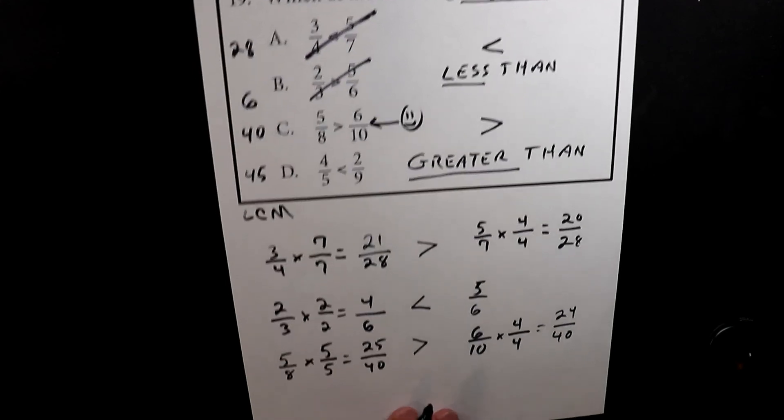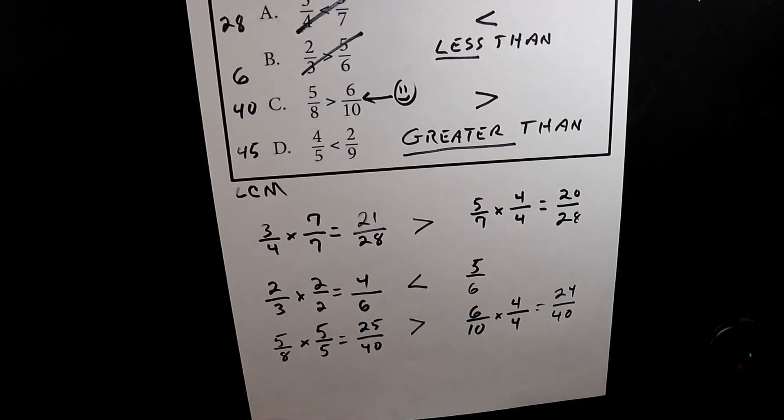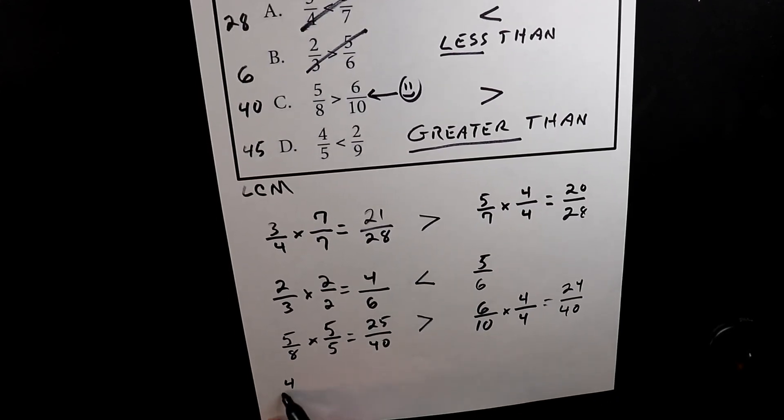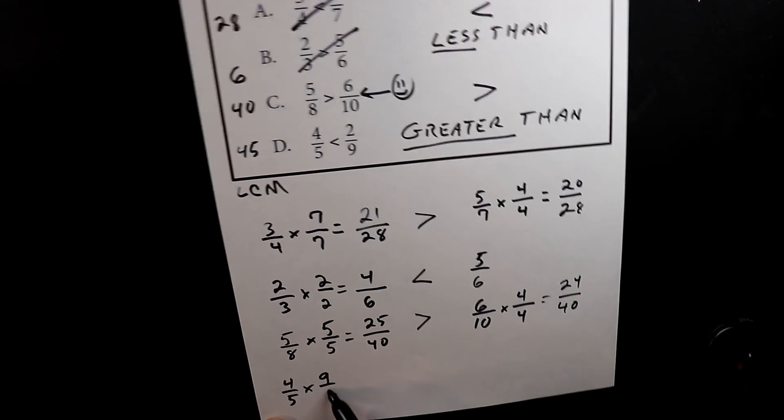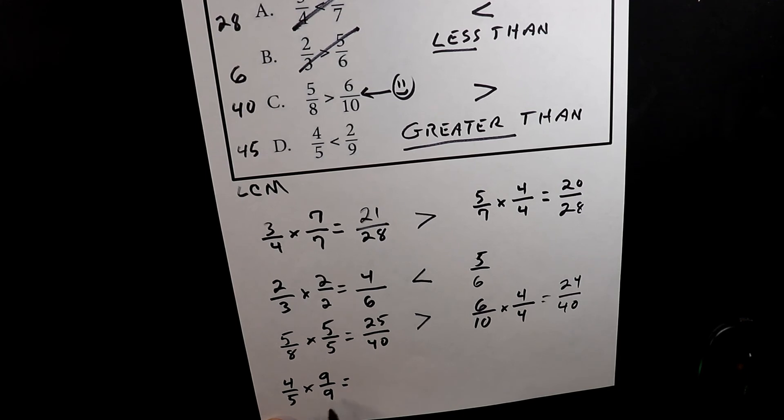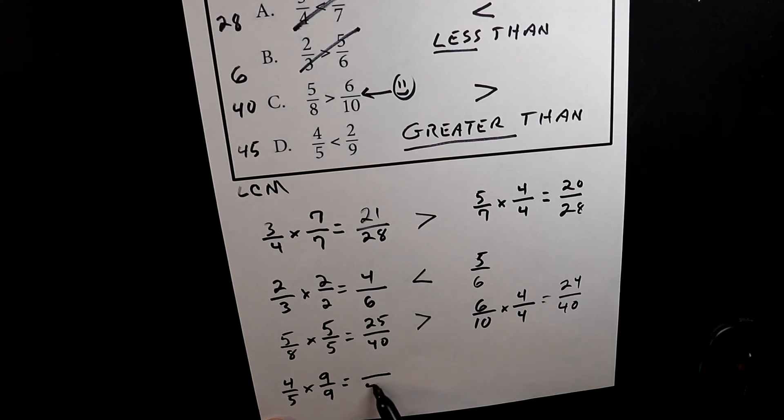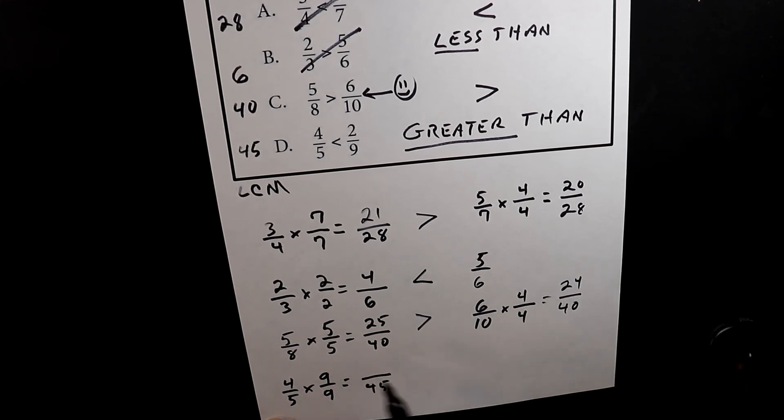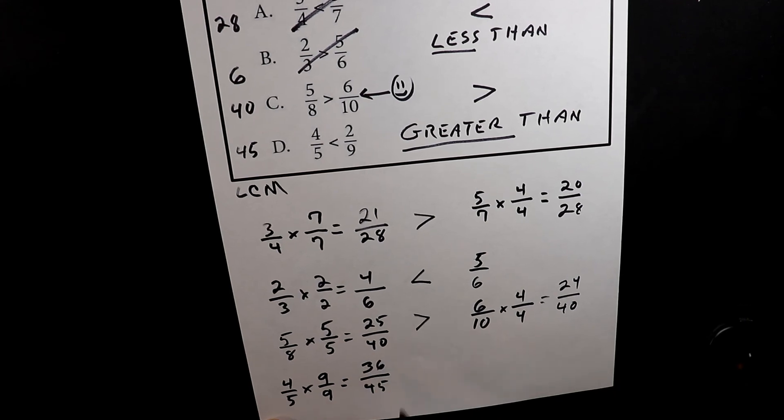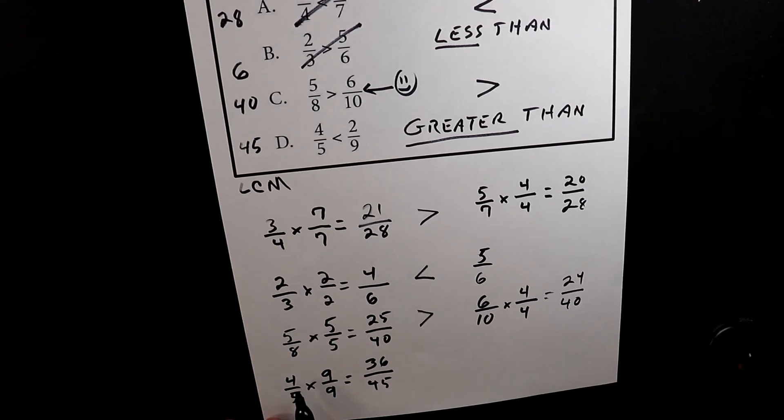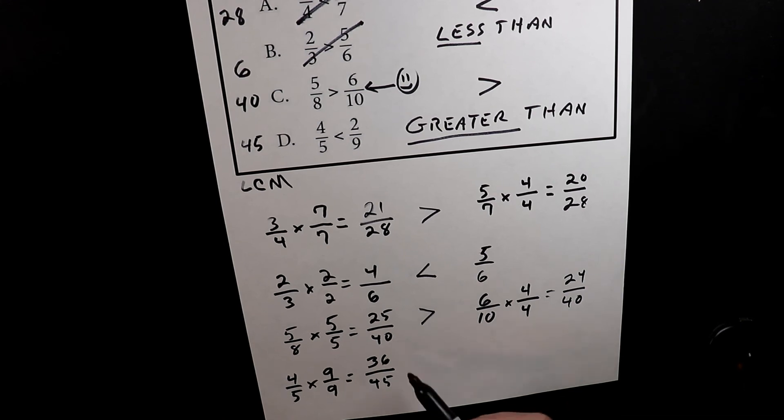You might as well do the last one, just to get the practice in. So we have 4 over 5 times 9 over 9. 5 times 9 is 45, 4 times 9 is 36. So I don't know if you've noticed, but I'm doing the multiplication kind of quick. Learning the multiplication table is just a matter of practice.